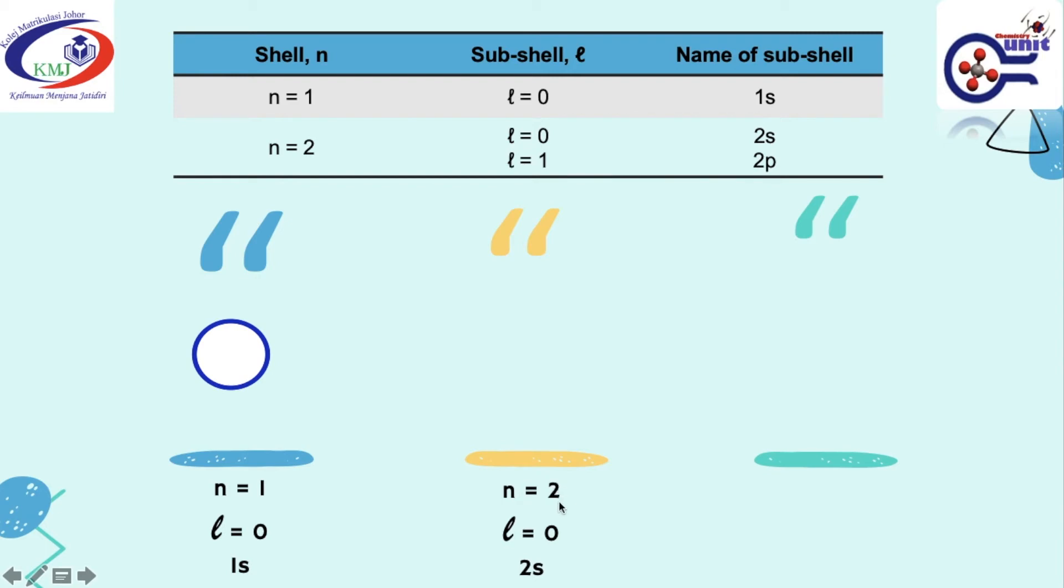2 refers to the value of n, S refers to the value of L equal to 0. As you can notice, this orbital is bigger than this because it has a bigger value of n. So when it has a bigger value of n, the size of the orbital will be bigger. They have the same shape because the same value of L, both value of L is 0.